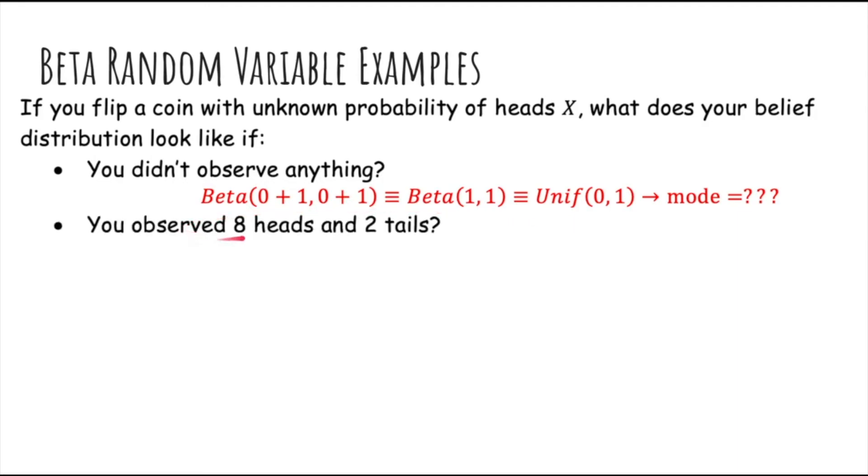What if you observed 8 heads and 2 tails? Well, you need a beta distribution with 8 plus 1 as alpha, and 2 plus 1 as beta, so we have beta 9, 3, and the mode is again 8 over 10, number of successes over the total number of flips.